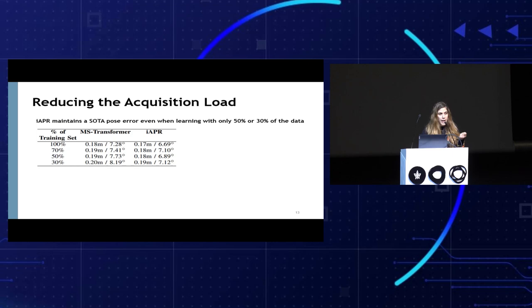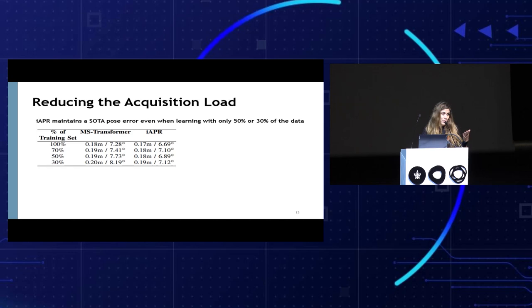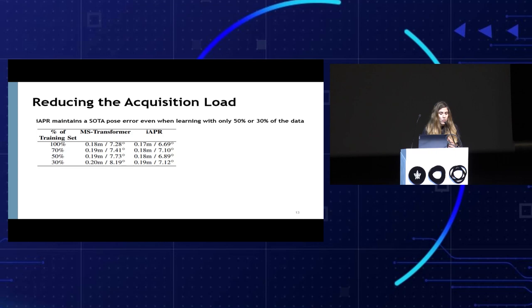One interesting aspect of our IAPR approach is that it combines APR with RPR. RPR enjoys a much larger training set — from the same set of images we can generate many pairs and train on them. So we asked whether we can reduce the data acquisition load with our approach. We compared MS Transformer trained on 100%, 70%, 50%, and 30% of the data against our method, iAPR. Our method consistently outperforms MS Transformer and importantly maintains state-of-the-art performance even when trained with only 30% of the data. With a specific sampling strategy, we can generate many more pairs, which could potentially improve results further.